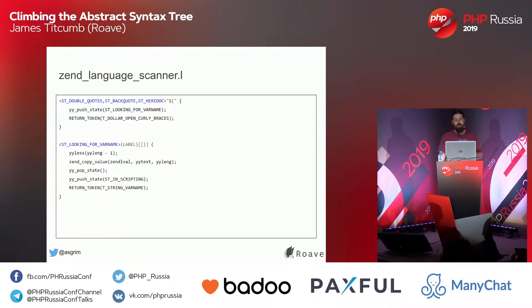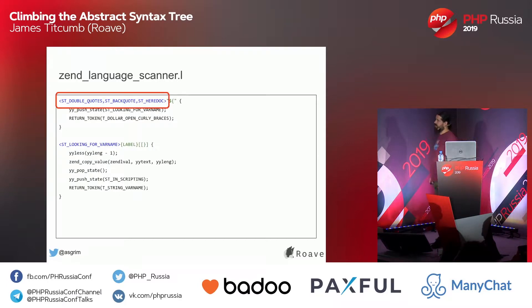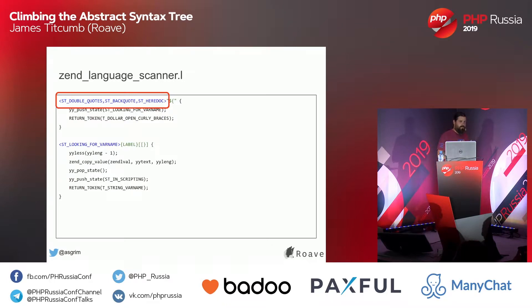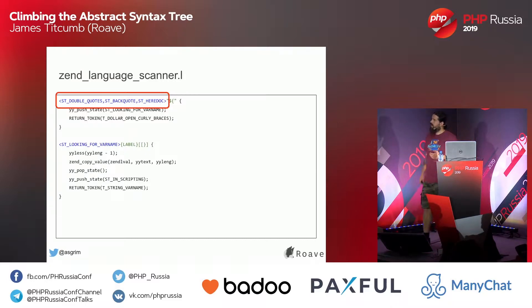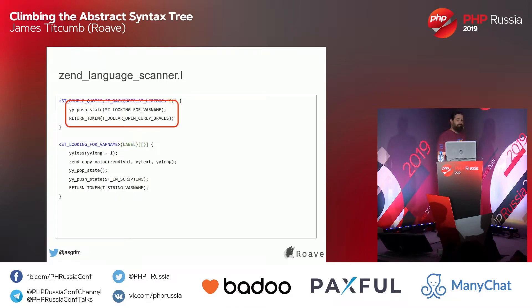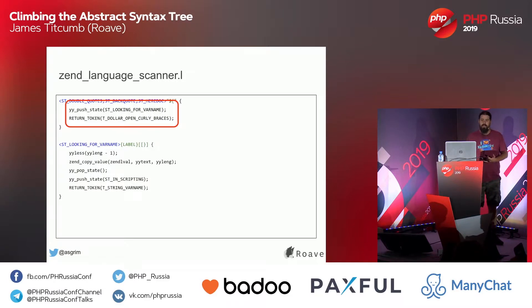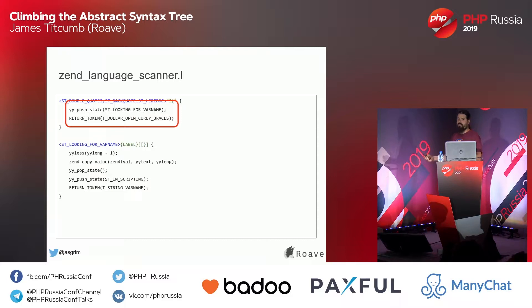The state allows the same tokens to be used in different ways depending on the context you're in. This particular token, dollar open curly brace, will only match when we're in double quotes, backticks, or in heredoc. When we encounter that token, dollar open curly brace, we're going to change the state — we're going to say now we're looking for a variable name. We also return the token to the token stream so that we know we've encountered T_DOLLAR_OPEN_CURLY_BRACES.